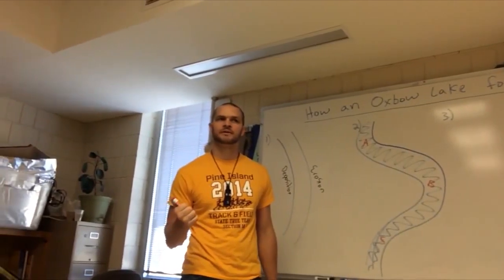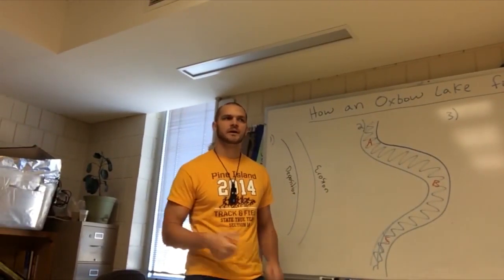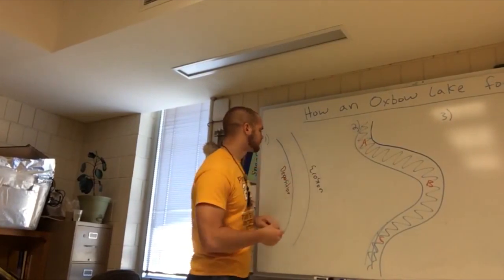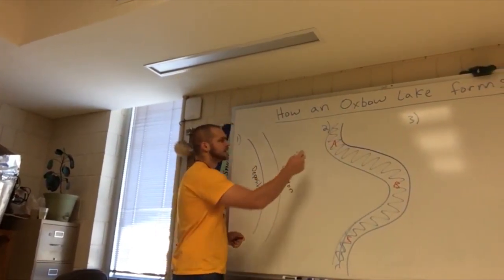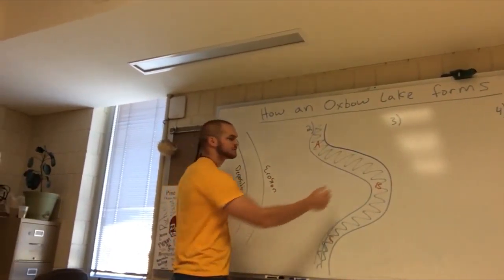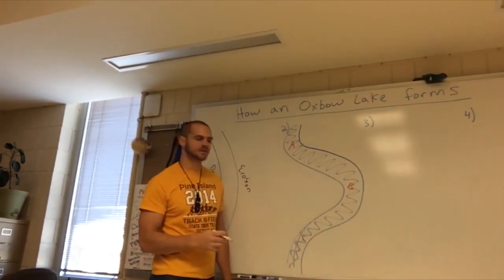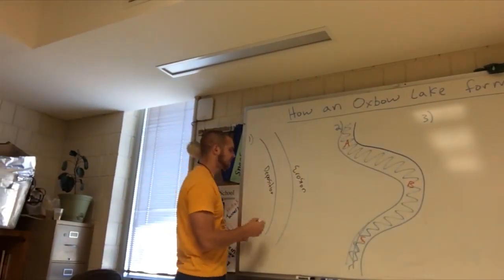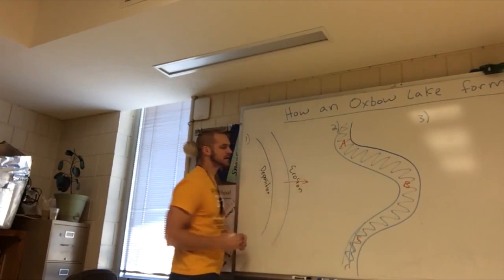How are those three corners going to erode differently at this point? So, my question is, which direction is A going to be eroding and depositing? Which direction is B going to be eroding and depositing? Which direction is C going to be eroding and depositing? Keeping in mind, erosion was making this move that way.